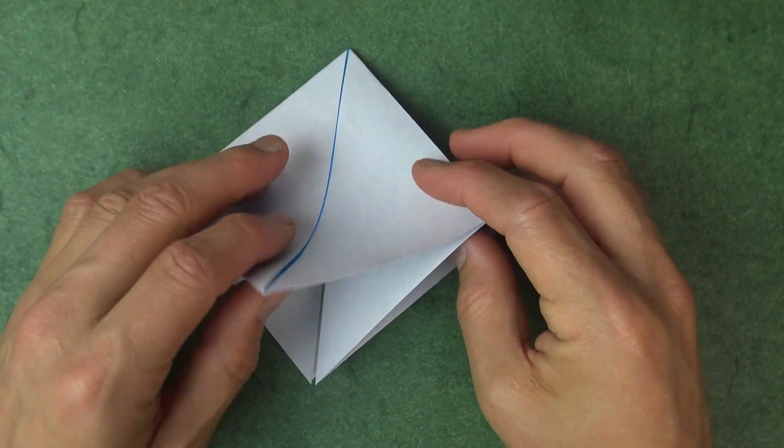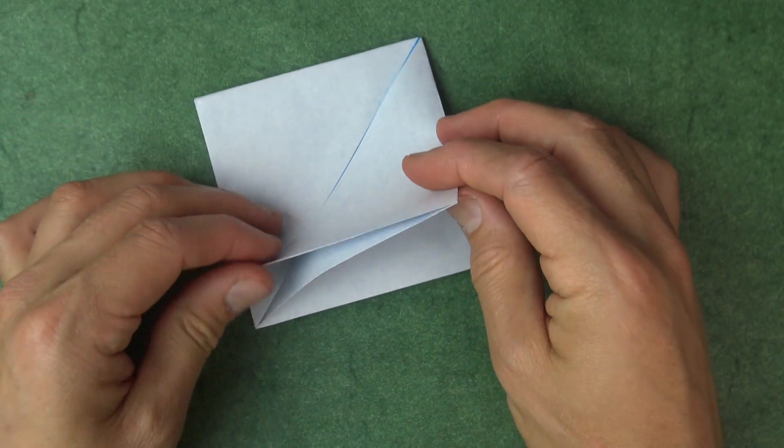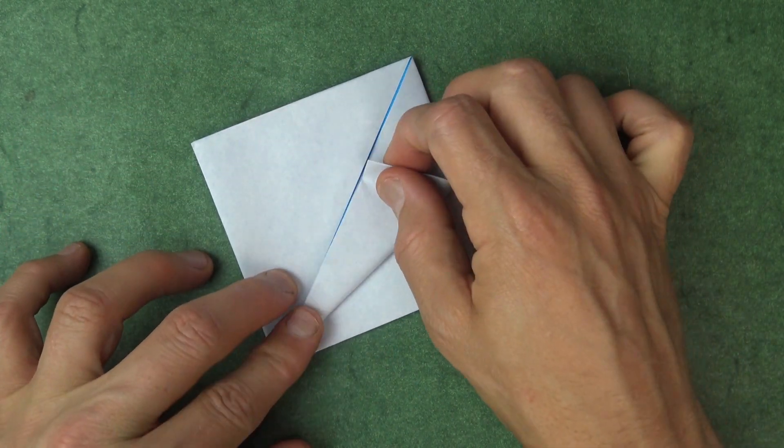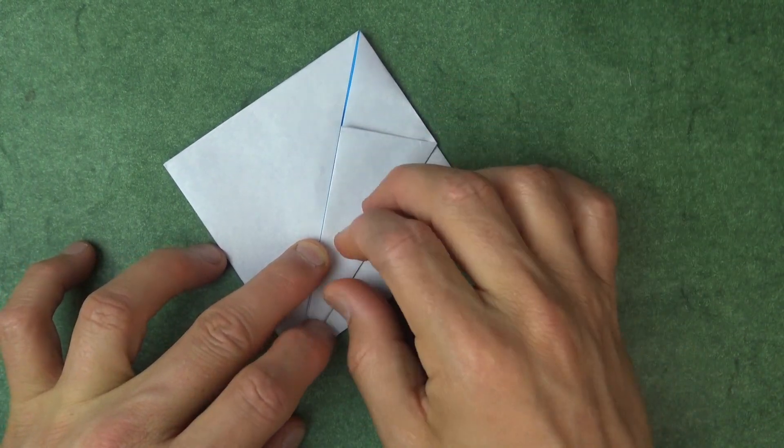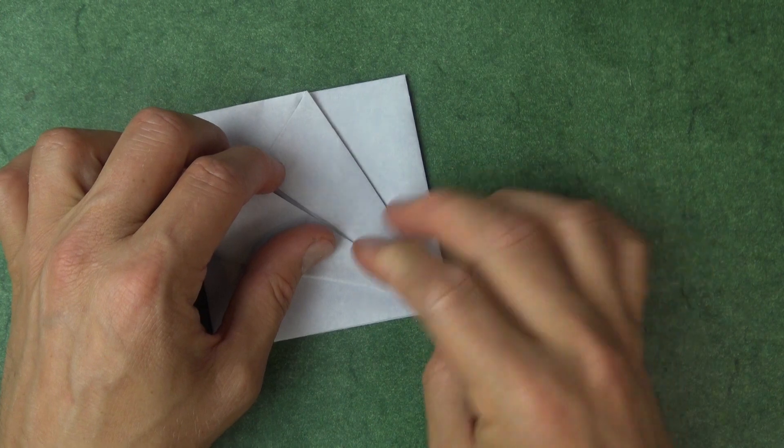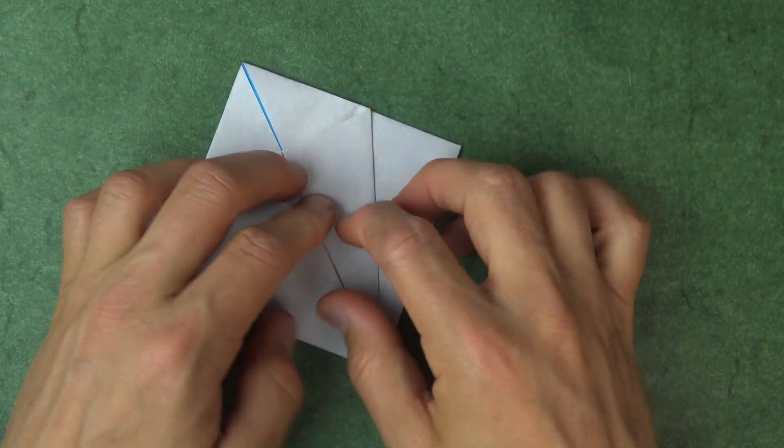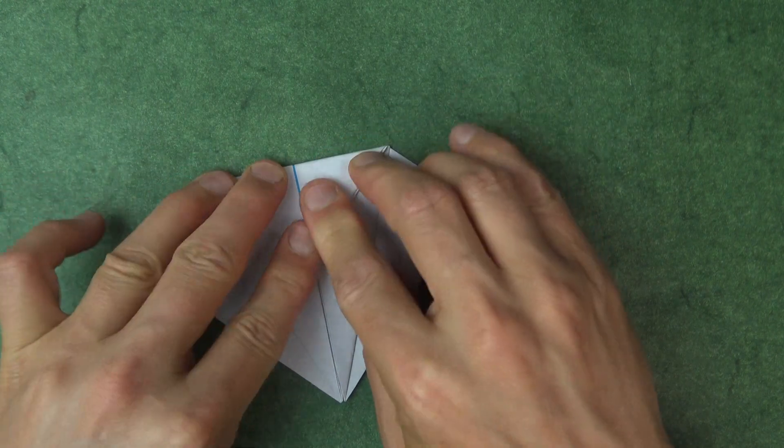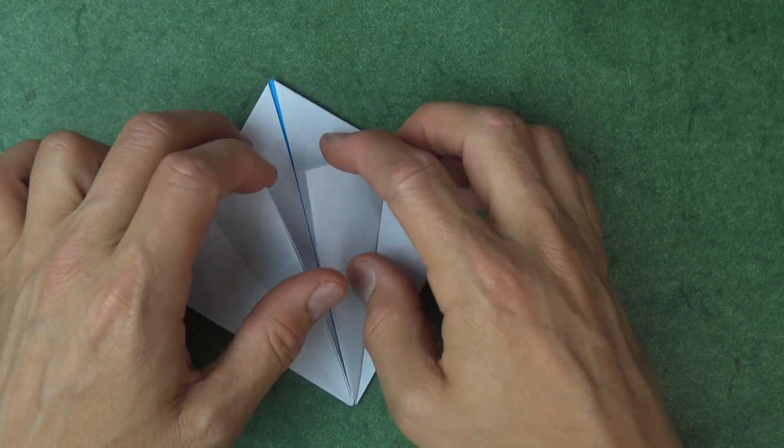Alright, so here we have the square base. Now we're going to make a bird base. So make sure that these four corners are pointing to you and fold this flap up so that these edges align with the middle. And repeat on this side. And repeat on this side. And fold the top down over these edges.